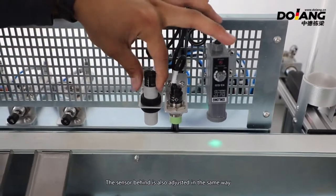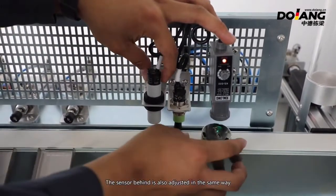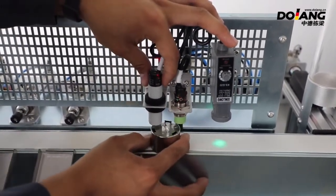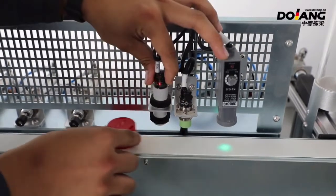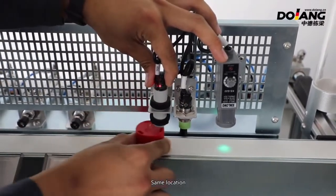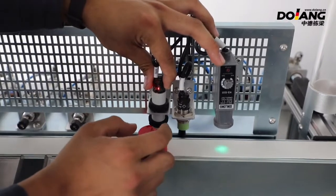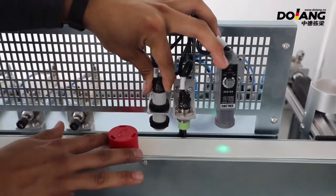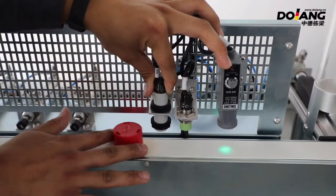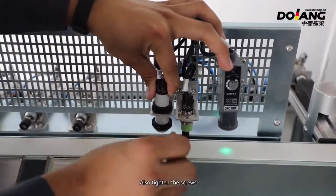Now that's it. The sensor behind is also adjusted in the same way. Same location. Put it in the lighted position. Also tighten the screw.